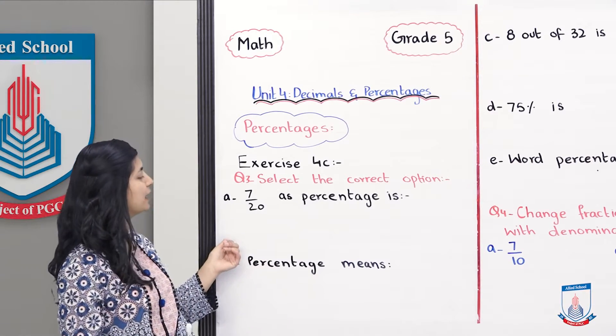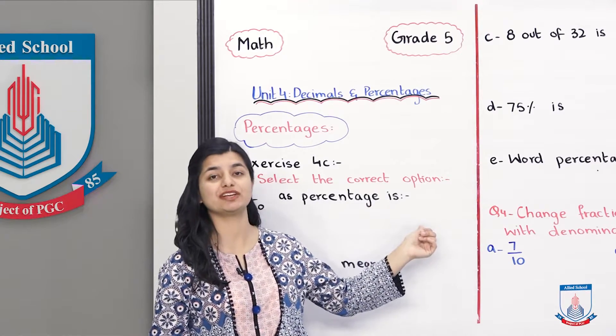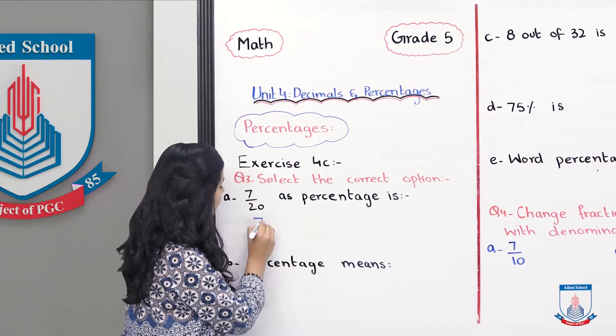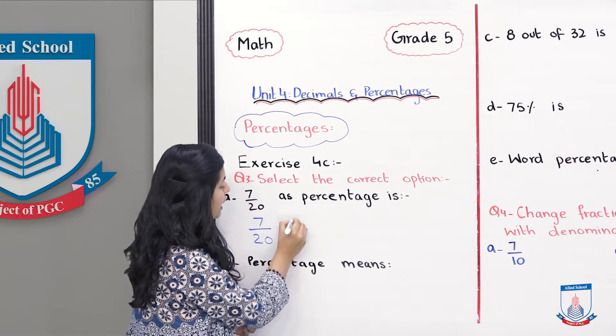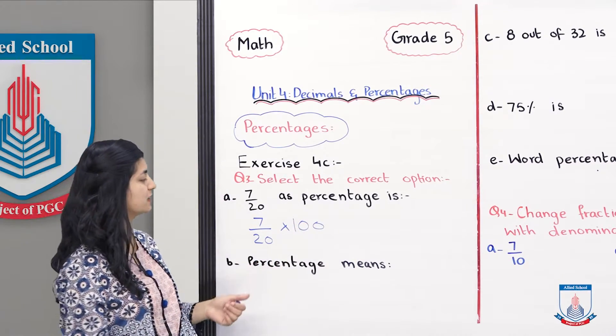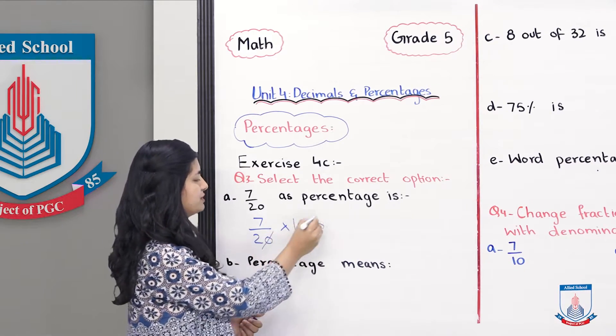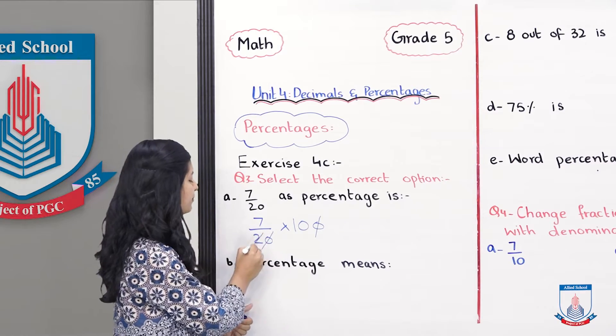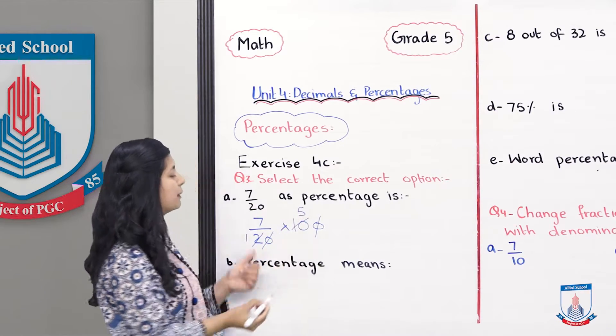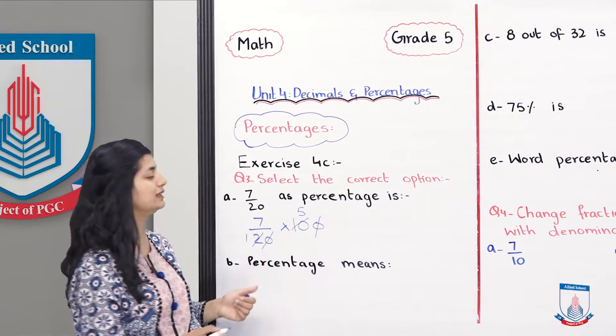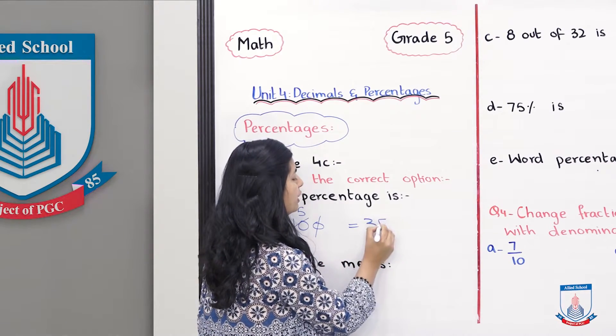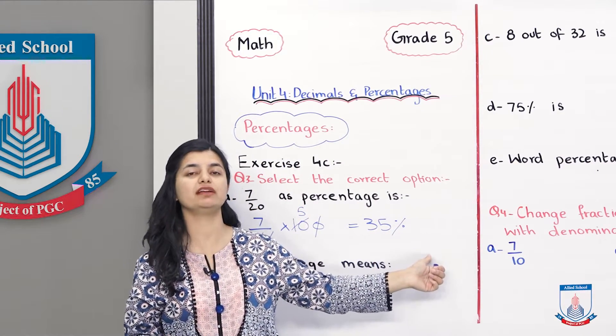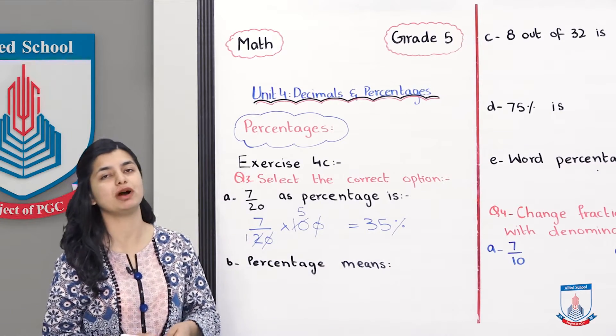Pahla part hai 7 over 20 as a percentage is fraction ki surat mein diya gaya hai. Percentage mein tabdeel karna hai. What do we do? We multiply it by 100. Aur jab aap isko 100 se multiply karte hoon, you can cancel out the zeros. Phir aapke paas reh gaya 10 aur 2, in dono ko 2 se divide kar jayen, 1 and 5. So aapke paas reh gaya 7 into 5 divided by 1 that is 35 over 1. Aur usko hum simply 35 ya 35 percent ki surat mein likh sakti hain. Usko aapne encircle kar lena hai.